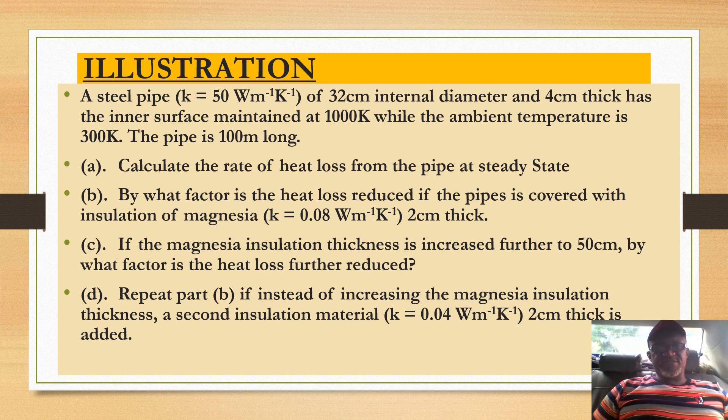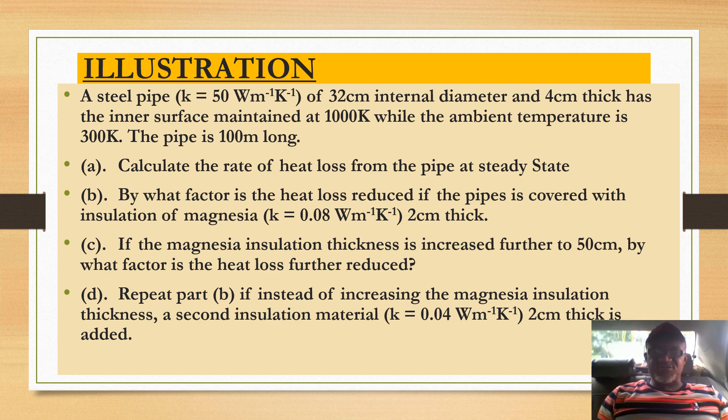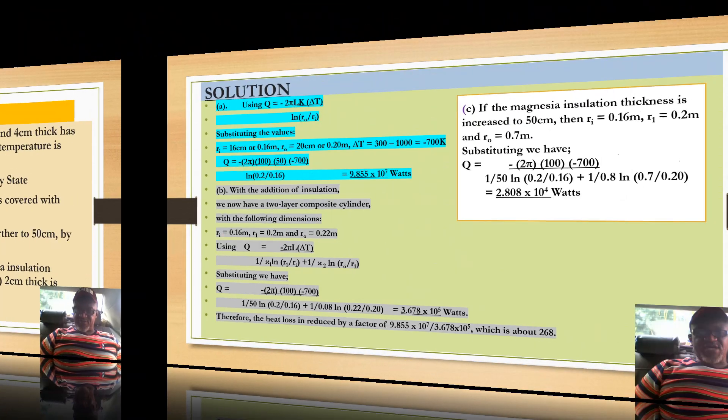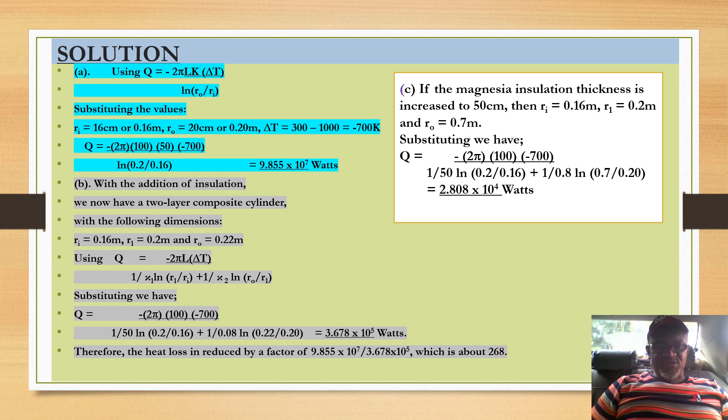Now we can employ this by solving for a steel pipe (k = 50 W·m⁻¹·K⁻¹) of 32cm internal diameter and 4cm thick, with inner surface maintained at 1000K while ambient temperature is 300K. The pipe is 100m long. (a) Calculate the rate of heat loss from the pipe at steady state. (b) By what factor is the heat loss reduced if the pipe is covered with insulation of magnesia (k = 0.08 W·m⁻¹·K⁻¹) 2cm thick? (c) If the magnesia insulation thickness is increased further to 50cm, by what factor is the heat loss further reduced? (d) Repeat part (b) if instead of increasing the magnesia insulation thickness, a second insulation material (k = 0.04 W·m⁻¹·K⁻¹) 2cm thick is added.